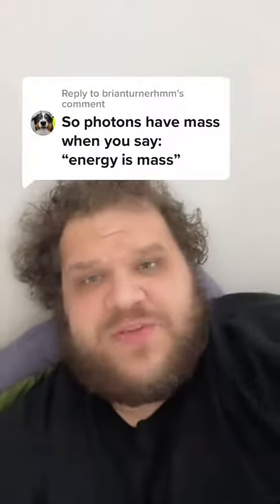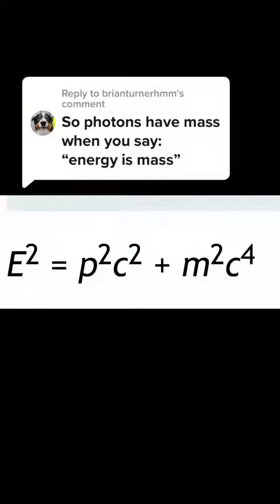Here's the actual equation we should be using: E squared equals p squared times c squared plus m squared times c to the fourth. You'll notice if you take out the p squared times c squared, you just end up with E squared equals m squared times c to the fourth, which can be simplified to E equals mc squared. And that's the simplification I was talking about earlier.